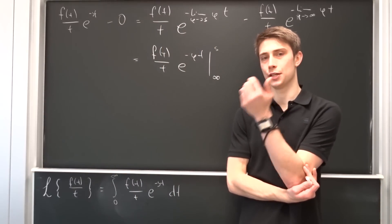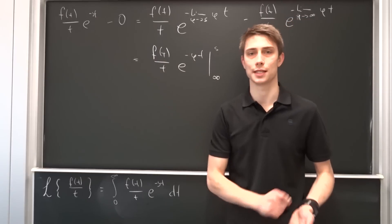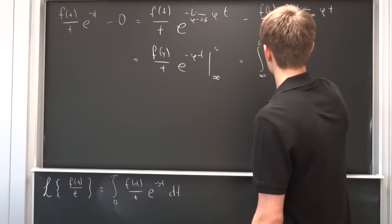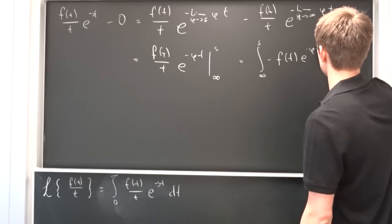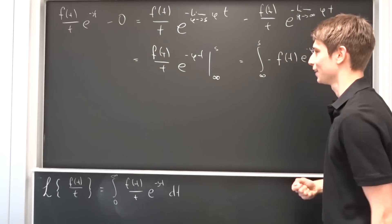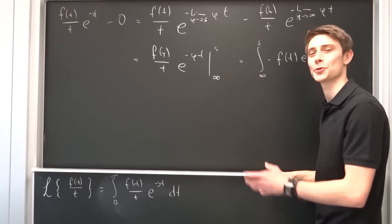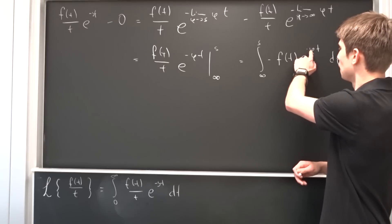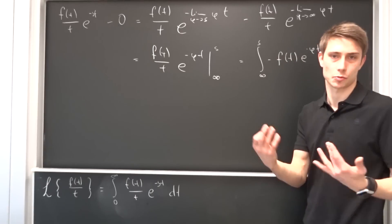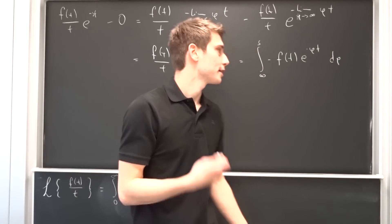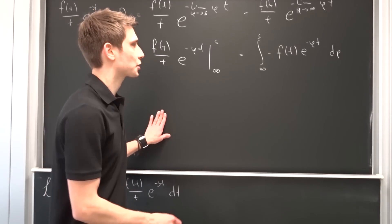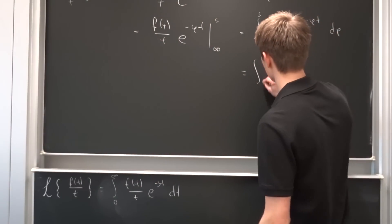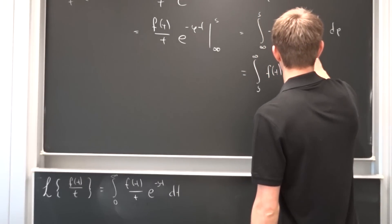Now we just have to find an integrand that, when integrated, gives us this function. That's a simple differential equation. We end up with the integral from infinity to s of minus f(t) times e to the minus φt dφ. When we integrate this, minus 1 over t gets dragged down, and minus times minus becomes positive, giving f(t) over t times e to the minus φt. Applying the minus sign switches the bounds, so we get the integral from s to infinity of f(t) e to the minus φt dφ.